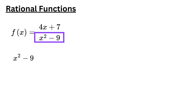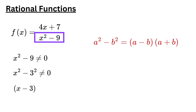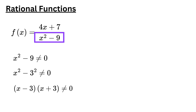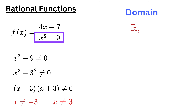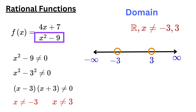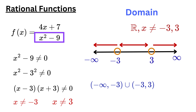For this function to be defined, x squared minus 9 must not equal zero. Factoring this quadratic expression using the difference of squares formula gives x minus 3 times x plus 3. Then we set each factor not equal to zero. This shows that x cannot be equal to minus 3, and x cannot be equal to 3. Therefore, the domain of this function is all real numbers except minus 3 and 3. On a number line, these values are shown with open circles. The domain can be written as negative infinity to minus 3, union minus 3 to 3, union 3 to positive infinity. The parentheses around minus 3 and 3 indicate that both values are excluded.